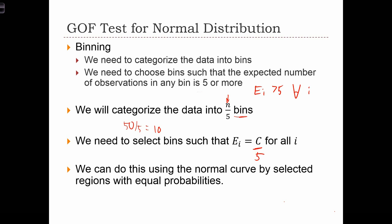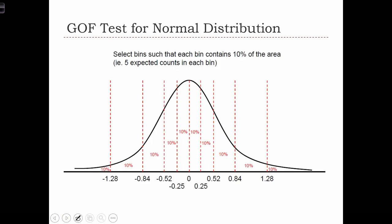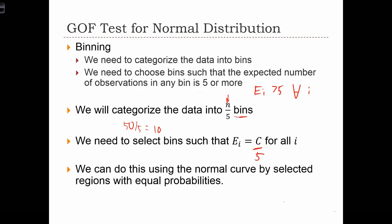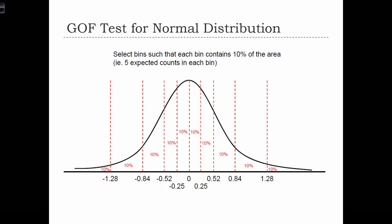So in order to split this data up into bins, we're going to use the normal curve, and we're going to select regions from the curve with equal probabilities. So if this is a normal curve, and we know that we need to have 10 bins, because we decided over here that if we divided the data up into 10 bins, we could expect to see 5 observations in each bin. So what we're going to do is take the normal curve, and split it up into 10 equal regions.